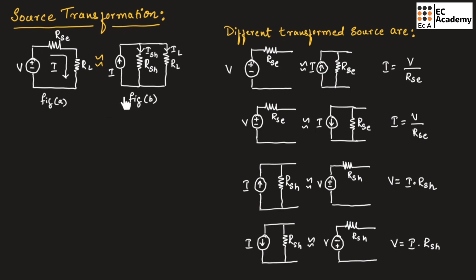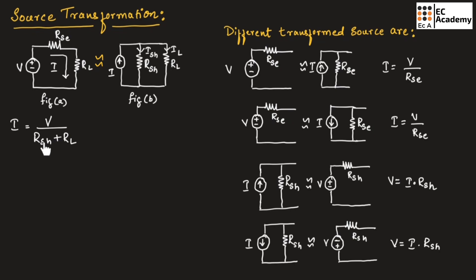From this figure, we can write I is equal to V divided by RSH plus RL. Here RL is the load resistance. Since the resistor is connected in shunt with the current source, that is why we have represented it as RSH. Let us call this equation number one.